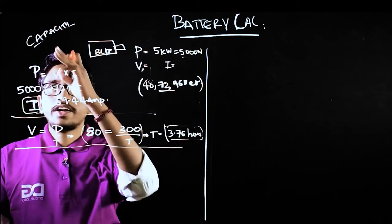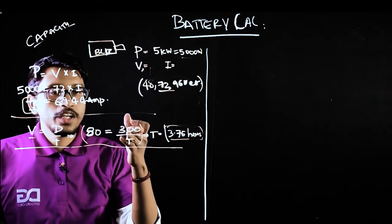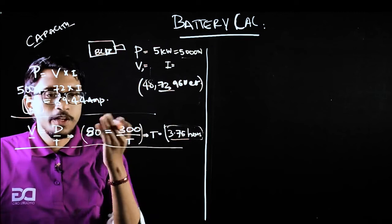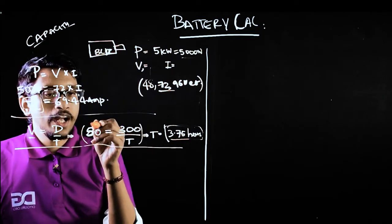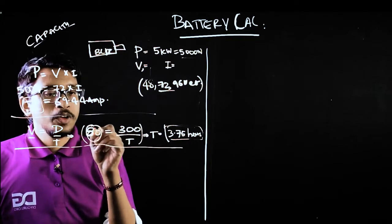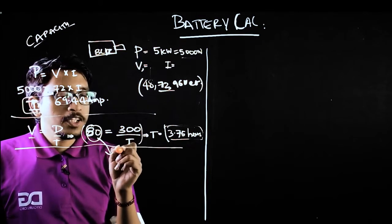What I need to find is the capacity of battery required to move the vehicle for 300 kilometers at a speed of 80 kilometers per hour. You may ask me why I took only 80 kilometers per hour and why can't I take the maximum speed. 80 kilometers per hour is what I consider as an average speed.